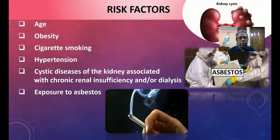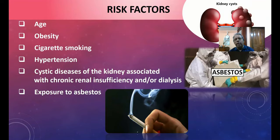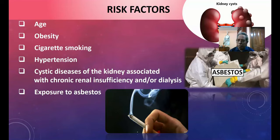Risk factors for renal cell carcinoma include: elderly age group, obesity, cigarette smoking, hypertension, cystic diseases of the kidney associated with chronic renal insufficiency or dialysis, and lastly exposure to asbestos. These are the risk factors for development of malignant lesions.